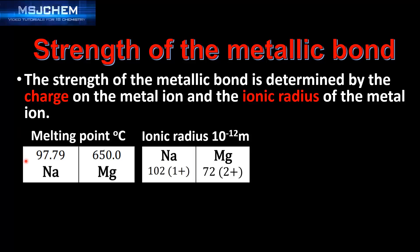Let's compare the melting point of sodium and magnesium. The melting point of sodium is around 98°C. The melting point of magnesium is 650°C. If we compare the ionic radius, magnesium has a smaller ionic radius than sodium.